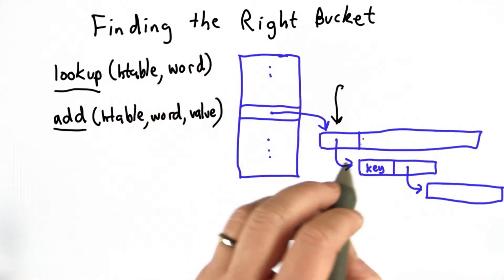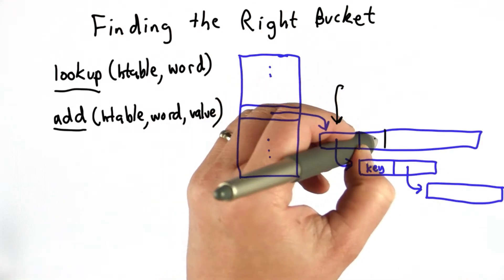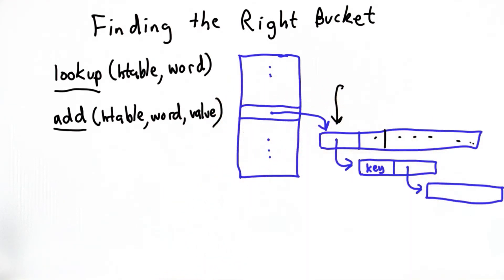If we find the right bucket and we're doing a lookup, the next thing we need to do is look through all the entries in that bucket to find if there's one that matches the keyword.